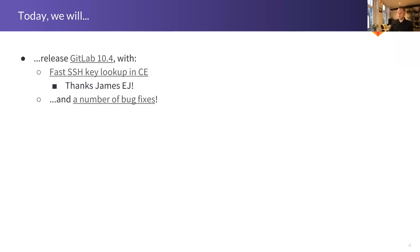You might be wondering why we only contributed one feature to GitLab 10.4. Well, one reason is that the development month for this release took place from December 7th until January 7th, which included the holidays. During the week between Christmas and New Year's, a lot of people ended up taking off, so we were a little bit limited in our capacity. The other thing that contributes to this relatively low output for 10.4 is that during that development month, we had a couple of people working on really big features that would take more than one month to complete. They were doing investigative work during the 10.4 month and only actually writing shippable code during the current month.